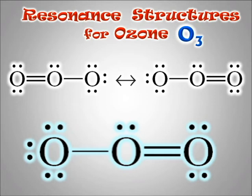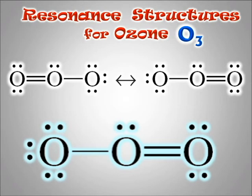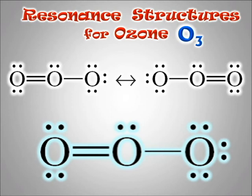Resonance structures are necessary when one Lewis structure isn't enough or doesn't make sense. What's really happening is probably that the bond is somewhere in between a single and double bond — like a 1.5 bond — with valence electrons delocalized around the whole molecule. We'll see only a few examples of this: ozone now, and another in organic chemistry. Note that some molecules require more than two resonance structures.